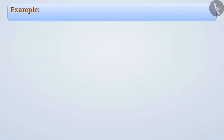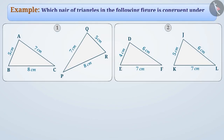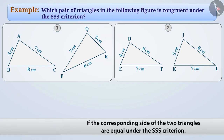Next example: state which pair of triangles in the following figure is congruent under the SSS criterion. By the SSS congruence rule, if the corresponding sides of two triangles are equal, then those triangles are congruent.